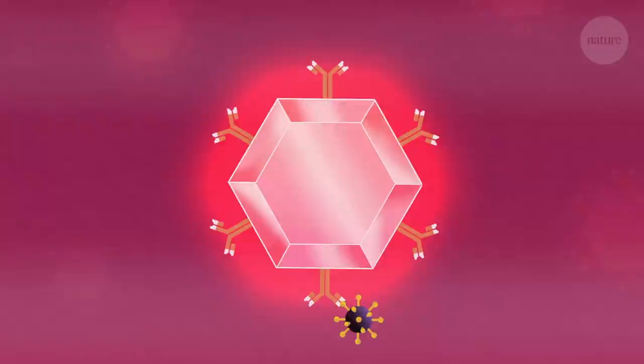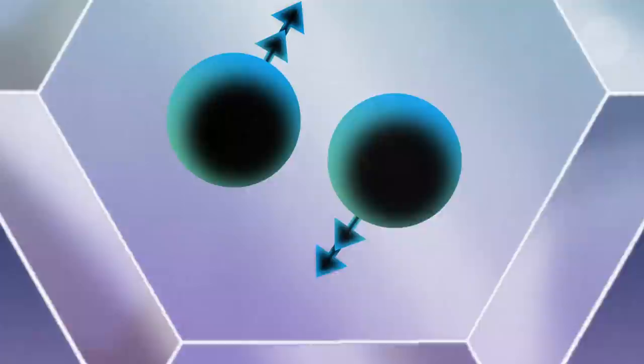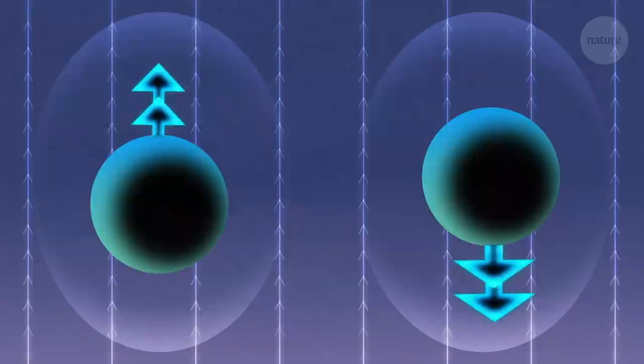NV centers can also transform diamonds into incredibly sensitive magnetic field detectors. The energy of the NV is now different when its spin is aligned with the magnetic field, rather than against it.